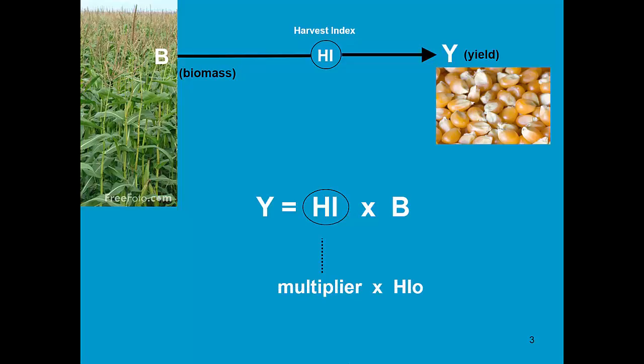The harvest index consists of two terms. One is the reference harvest index, which is a crop characteristic.